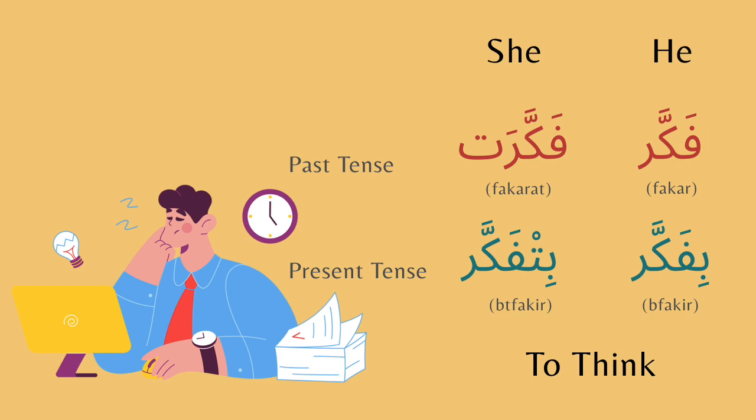The next verb is to think. For the past tense, for he you would say fakkar. For she you would say fakkarat. For the present tense, for he you would say bifekkir. For she you would say bittfekkir.